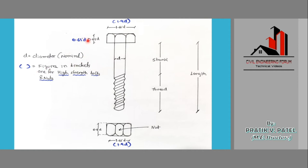Here 'd' is the nominal diameter of the shank. The dimensions written in blue are for high strength bolts and nuts, which we'll study in the next lecture. For black bolts (black marker): flange = 1.65d, flange thickness = 0.65d. For the nut, the thickness is 0.8 × diameter and the width of the nut is also 1.65 × diameter of the shank.